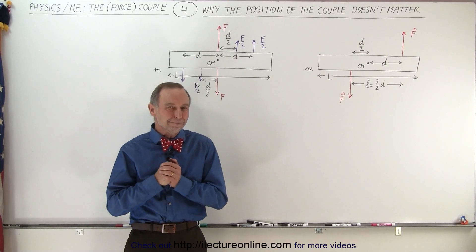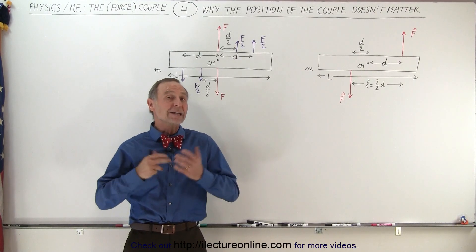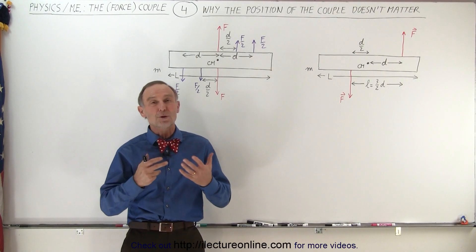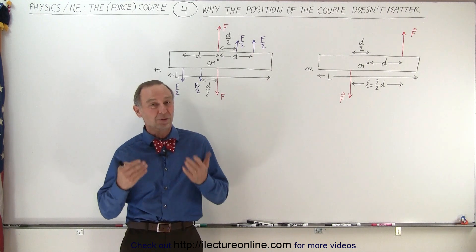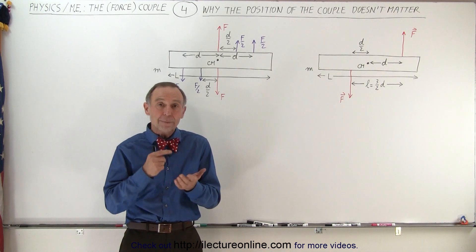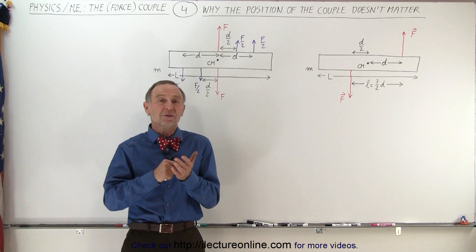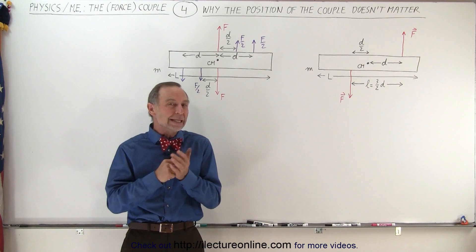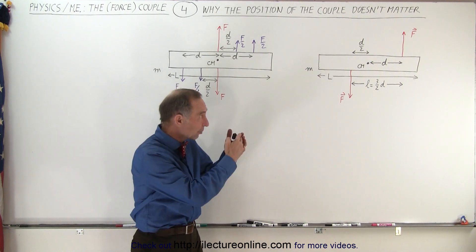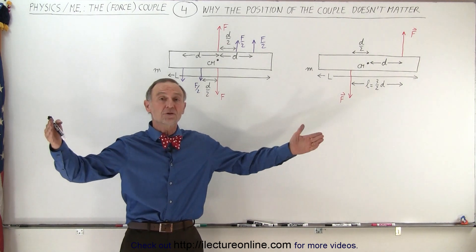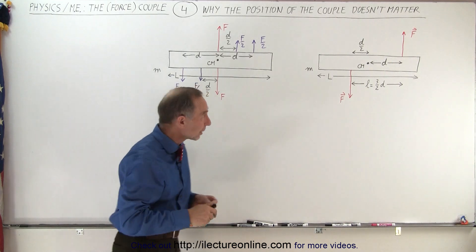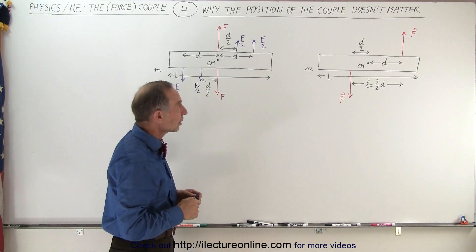Welcome to Electronline. Finally, in this video, we're going to show you why the position of the couple doesn't really matter. The point of rotation will always be at the center of mass, assuming that this is a bar with the mass equally distributed — center of mass right in the middle of the bar.